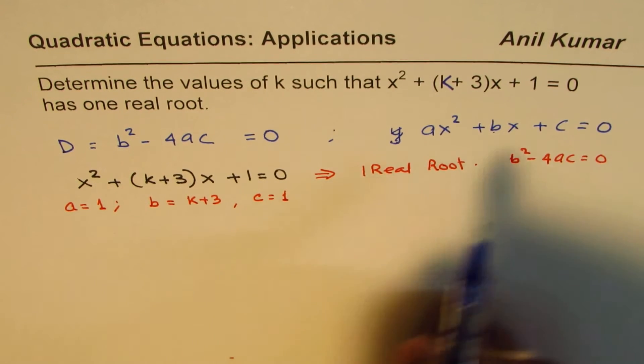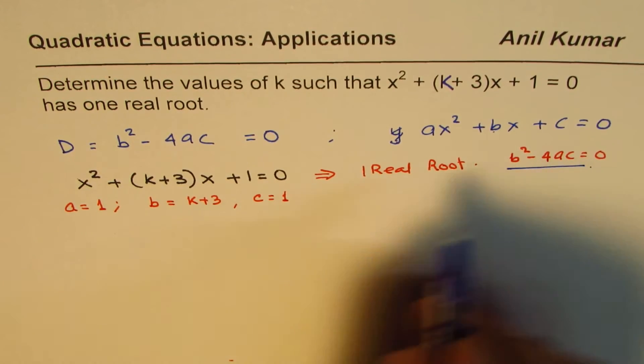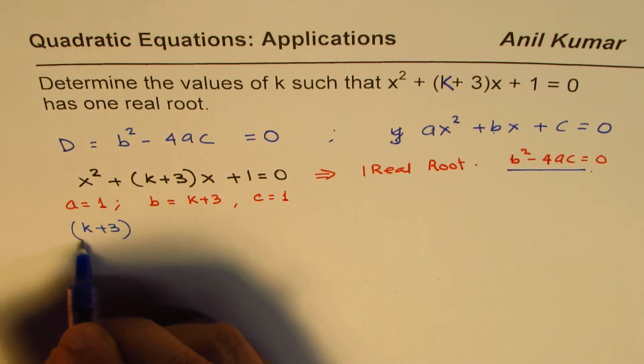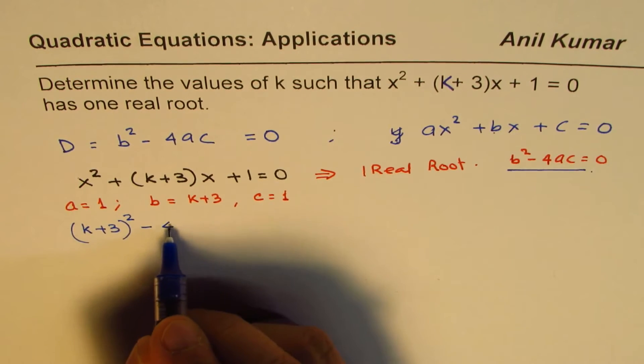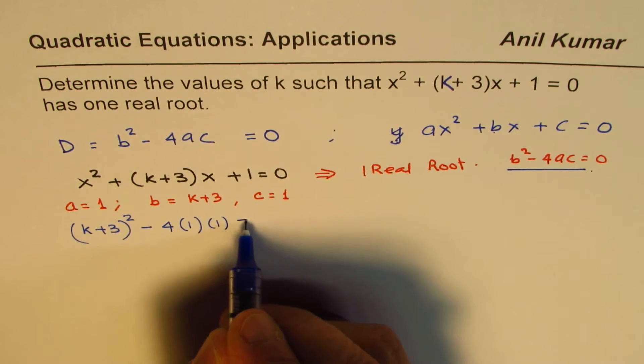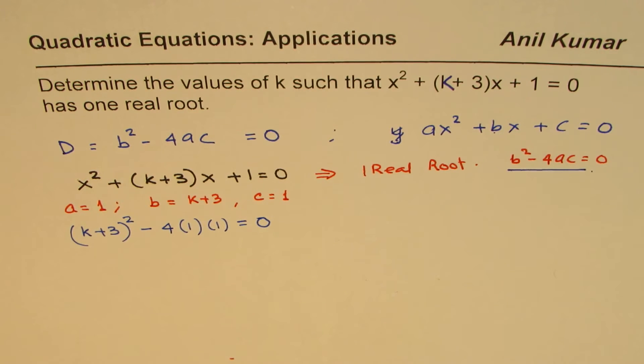When you say b² - 4ac, b is k+3, that means (k+3)² - 4 times a is 1 and c is also 1, equals 0. So that equation can be solved to find the value of k. I hope the point is absolutely clear.